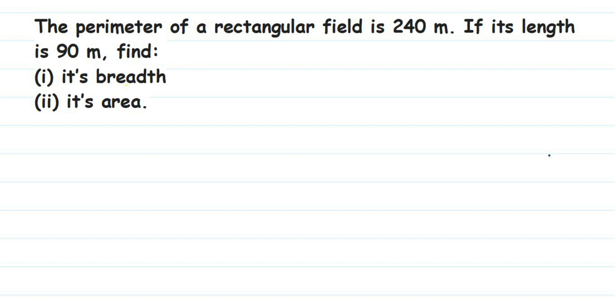Hello everyone, here is a question on rectangle. The perimeter of a rectangular field is 240 meters. If its length is 90 meters, find its breadth and its area.